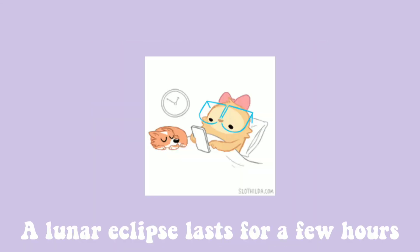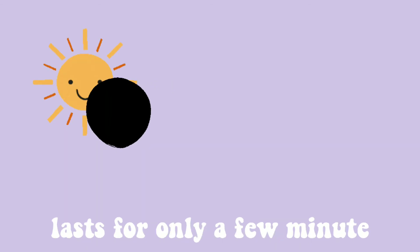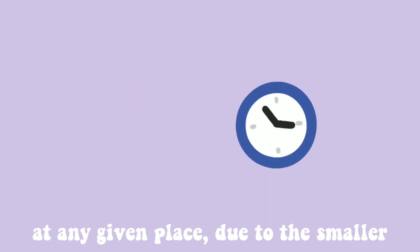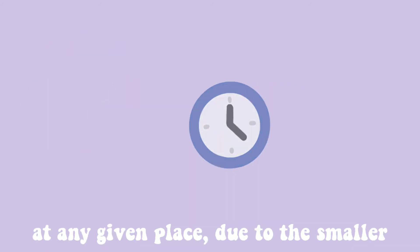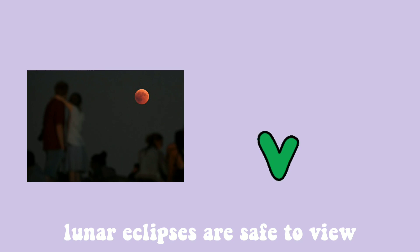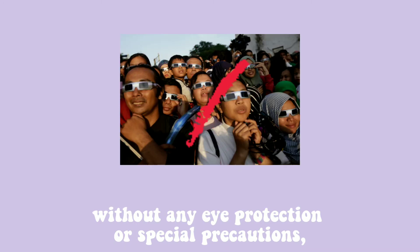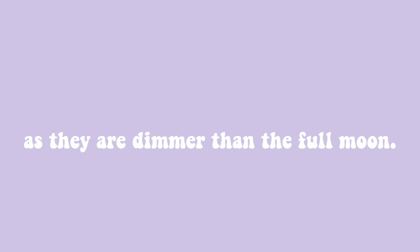A lunar eclipse lasts for a few hours, whereas a total solar eclipse lasts for only a few minutes at any given place due to the smaller size of the moon's shadow. Also, unlike solar eclipses, lunar eclipses are safe to view without any eye protection or special precautions, as they are dimmer than the full moon.